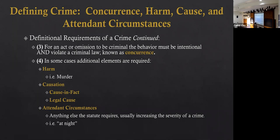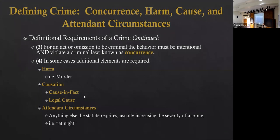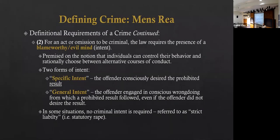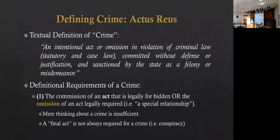Last class, we started the introduction to criminal law, conceptualizing what criminal law is. Then we started walking through the elements of criminal law. We began by looking at actus reus — the criminal act, the actual action itself. Remember, omissions are acts as well, if there's a legal duty to act. It's a physical action. Some action has to occur in order for a crime to occur.